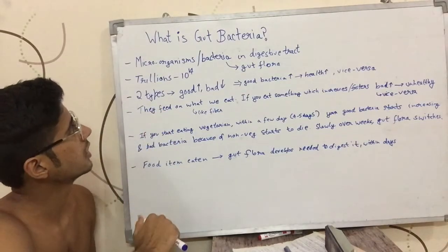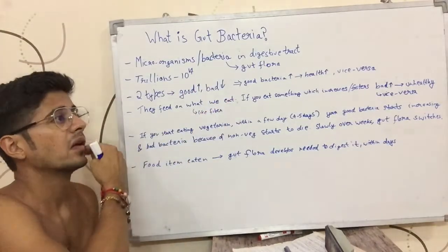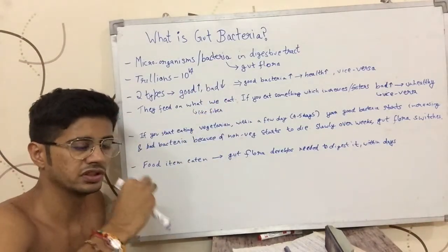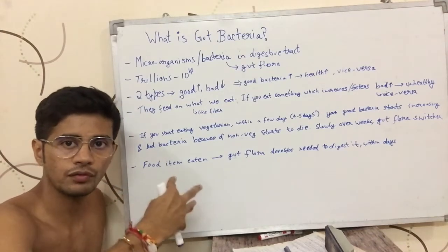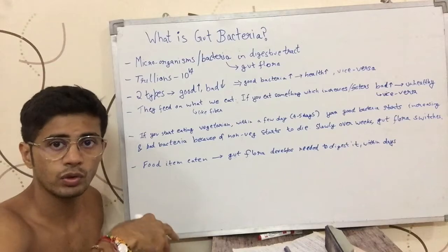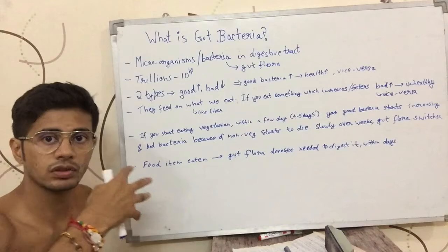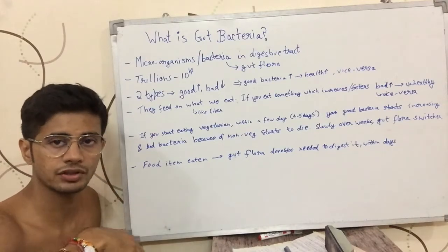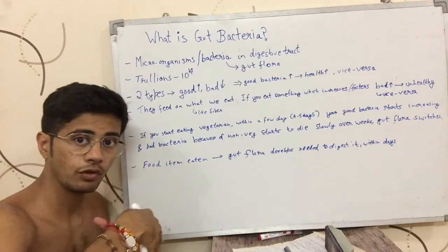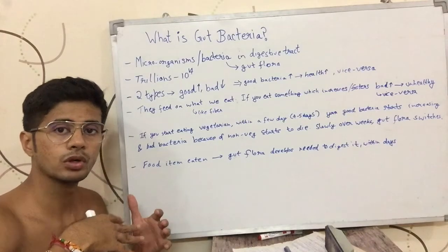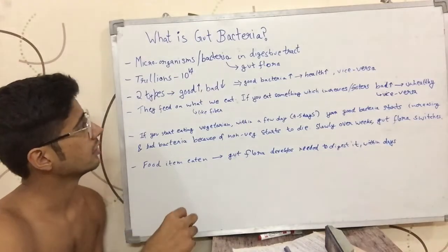There are two types of gut bacteria: good bacteria and bad bacteria. These bacteria affect your health. If you have more of the good bacteria, you are going towards a healthier version of your body. If you have more of the bad bacteria, you are going towards an unhealthier version. So what you want to do is maximize the growth of good bacteria and minimize the bad bacteria for better health.